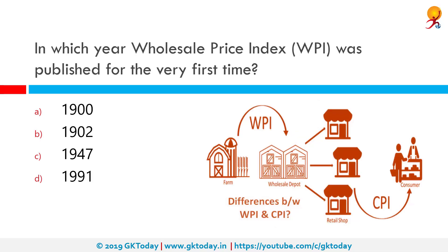In which year was the Wholesale Price Index published for the very first time? It was published for the very first time in 1902. The Wholesale Price Index, also called WPI, is the price of a representative basket of wholesale goods. Some countries like the Philippines use WPI changes as a central measure of inflation, but India has adopted the Consumer Price Index to measure inflation, while the United States reports a Producer Price Index instead.